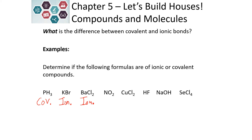Nitrogen is a nonmetal, oxygen is a nonmetal — both are nonmetals, so NO2 would be covalent. Copper is a transition metal in the shorter columns of the periodic table. Chlorine is in group seven — a nonmetal. So CuCl is a metal paired with a nonmetal, making it ionic.